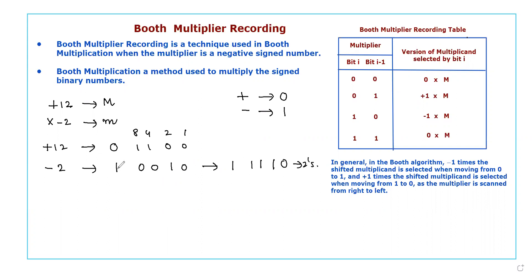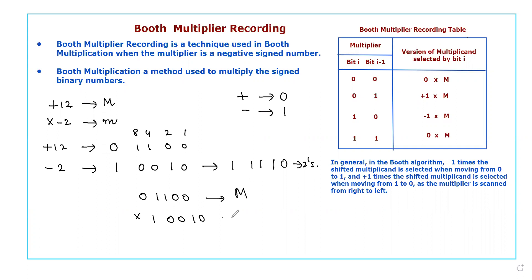Now to multiply +12 by -2, we rewrite the given numbers in binary form: the multiplicand is 0 1100, and the multiplier is 1 1110. These are the multiplicand bits and these are the multiplier bits.